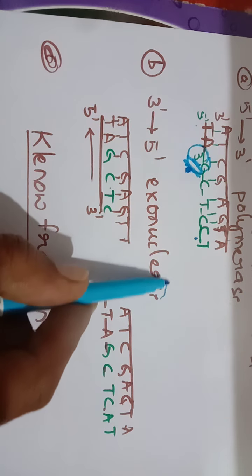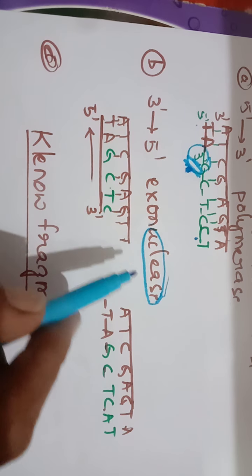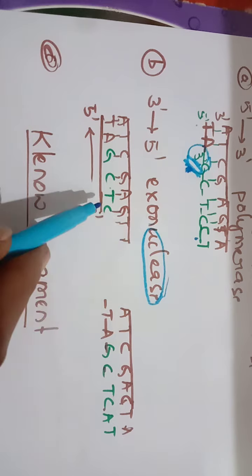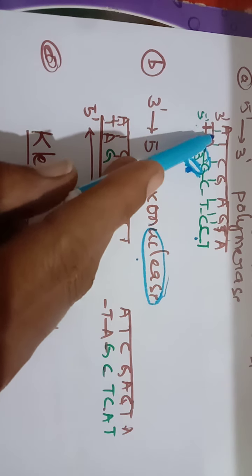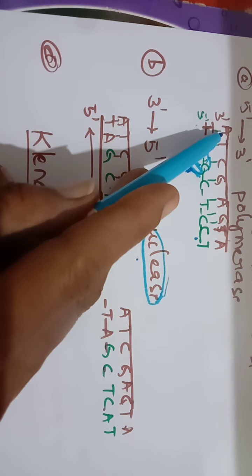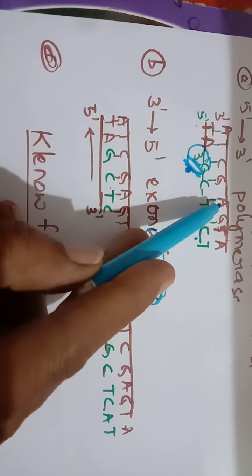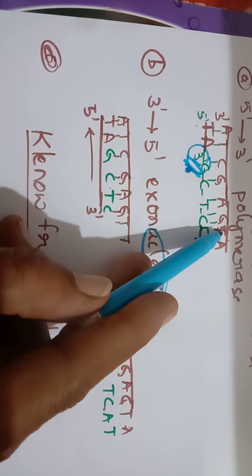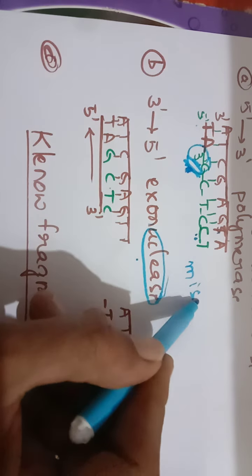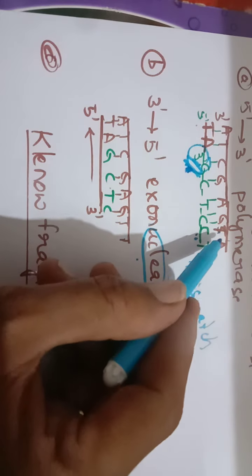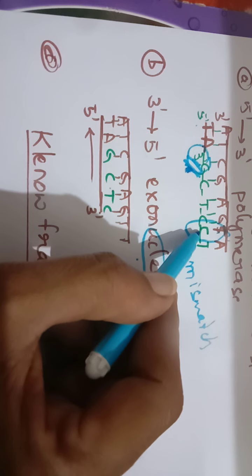The second property is the 3 prime to 5 prime exonuclease activity. Exonuclease means it removes nucleotides. When the DNA polymerase adds nucleotides, it checks complementarity — if A is on the template it adds T, if T it adds A, if C it adds G, and so on. But sometimes a mismatch occurs, for example T is on the template but C was added instead of A.